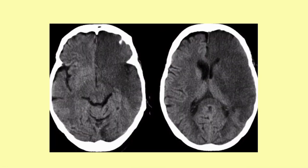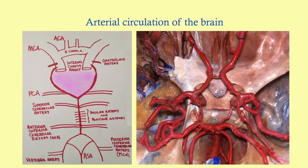Can you see the hypoattenuation here? These are both massive strokes — you can see the darker areas here and here on the CT images.